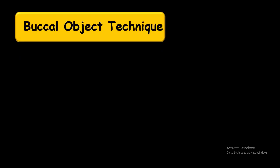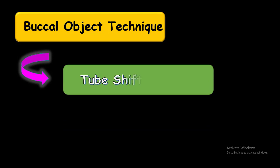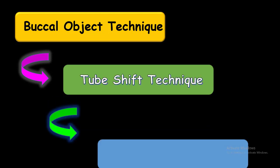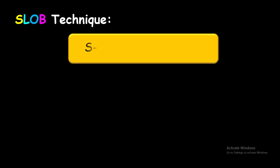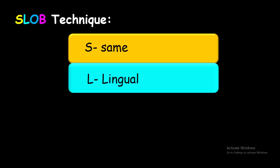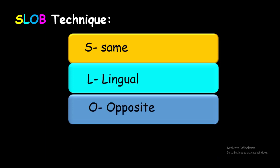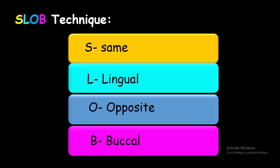The SLOB technique is also called the buccal object technique, the tube shift technique, and the Clark technique. What does SLOB stand for? SLOB stands for Same Lingual, Opposite Buccal. It is an image localization technique for understanding the buccal and lingual orientation of an object.